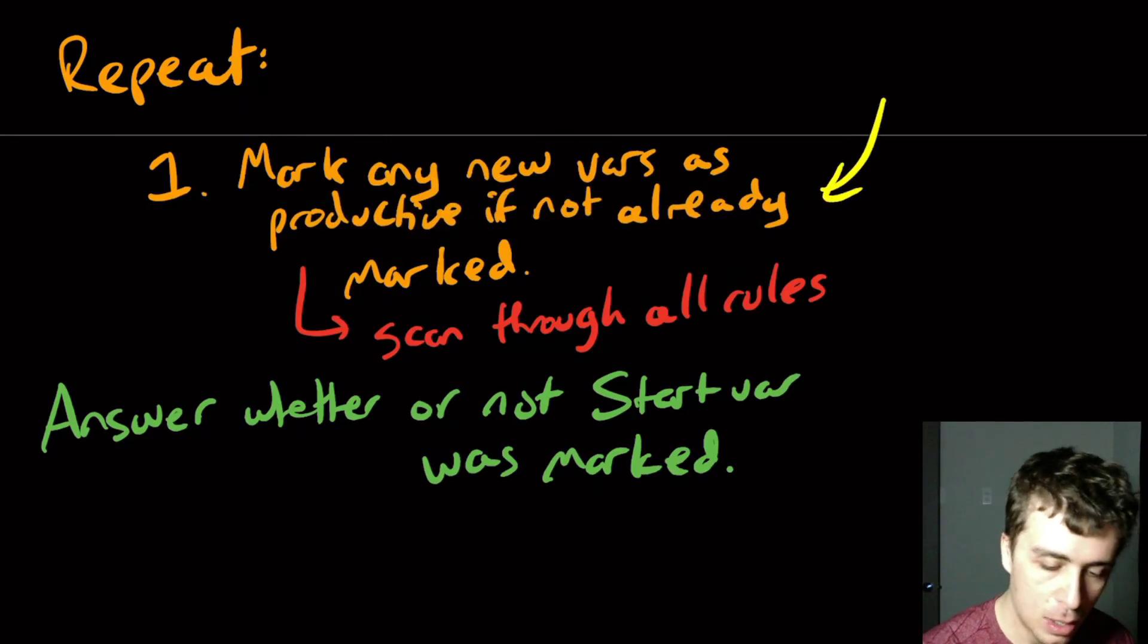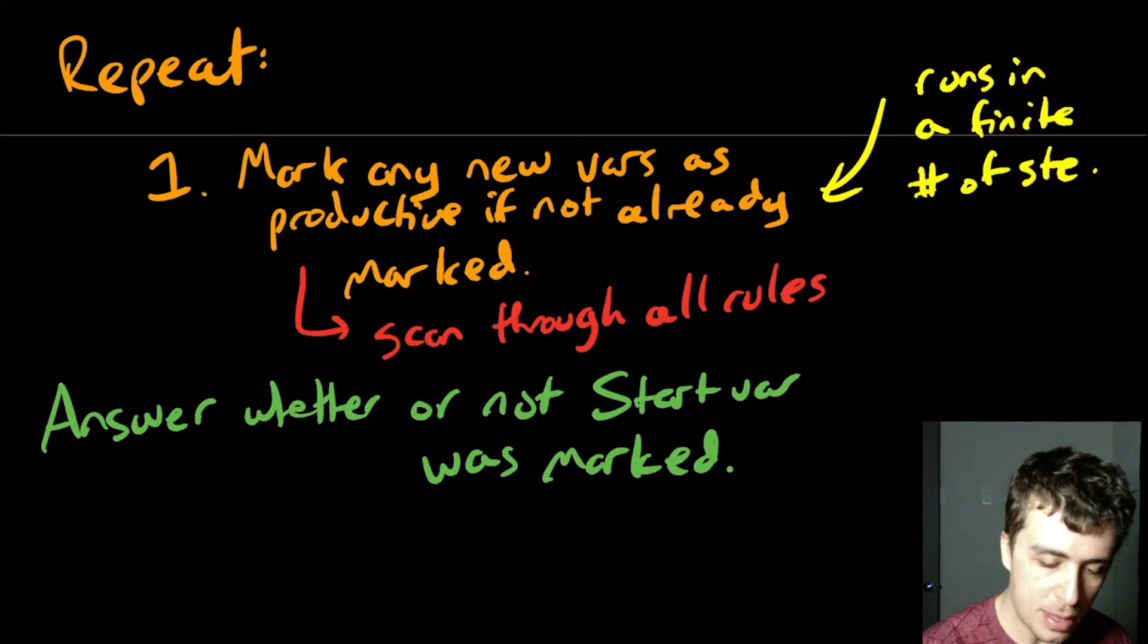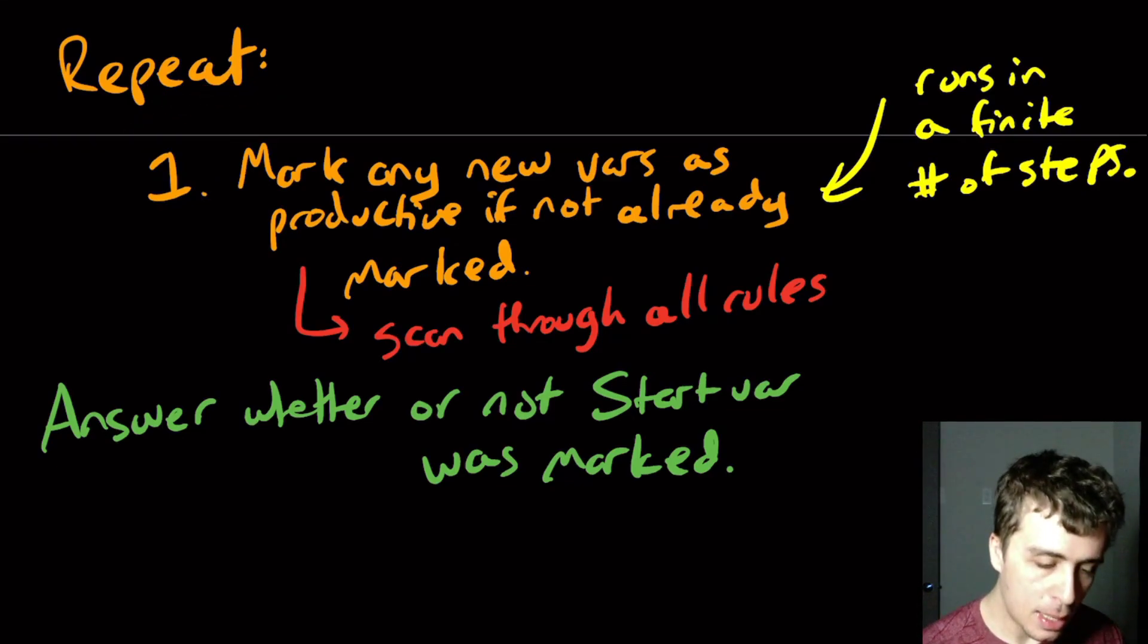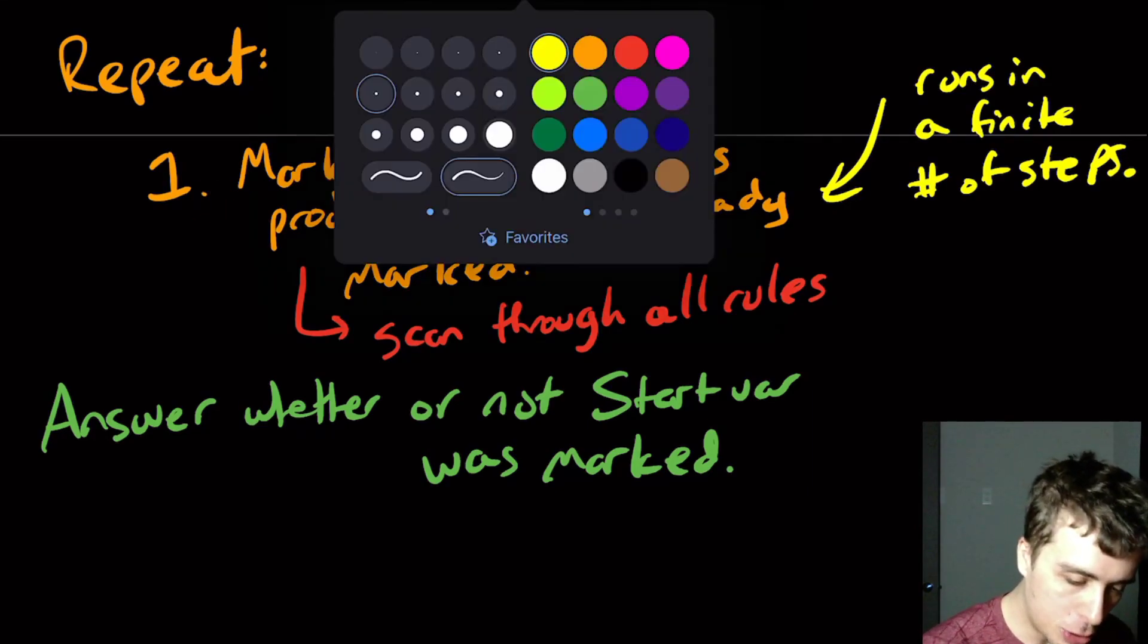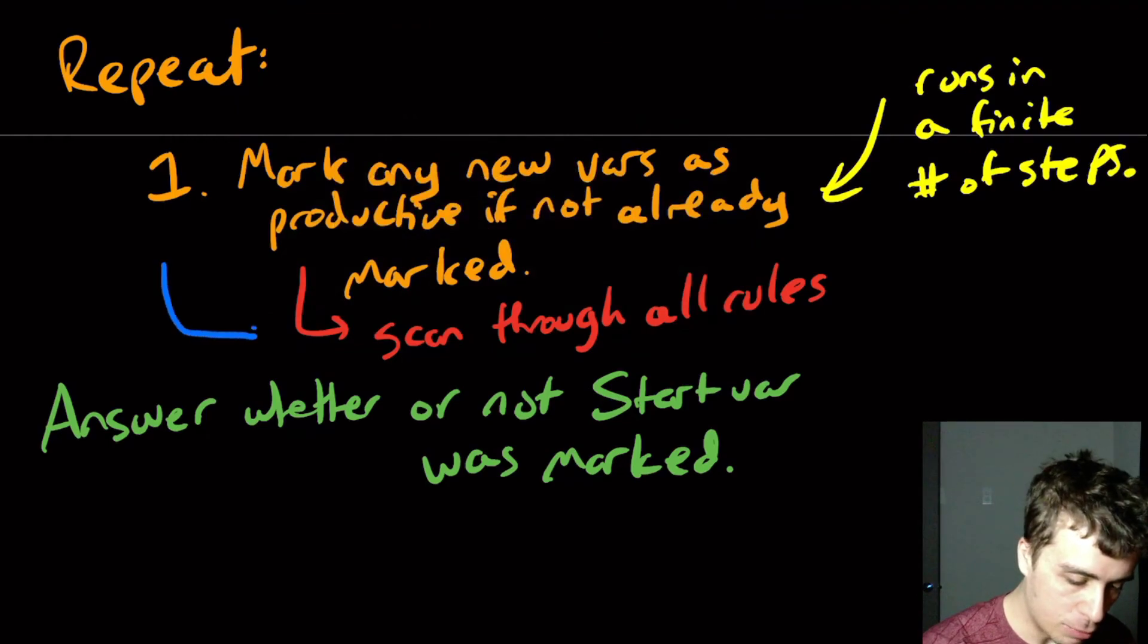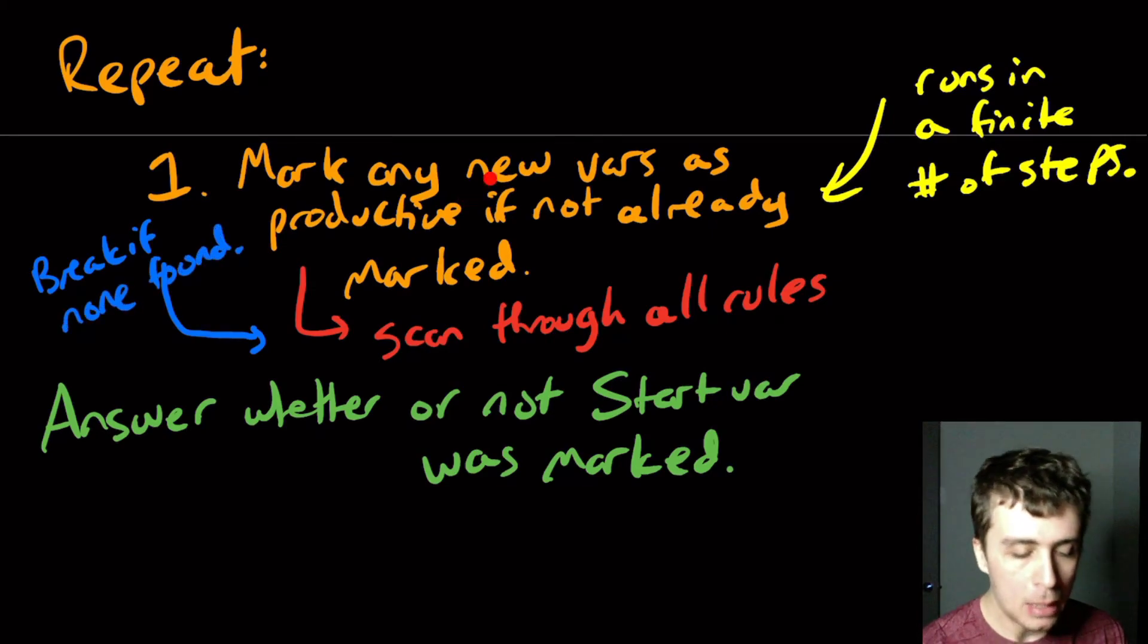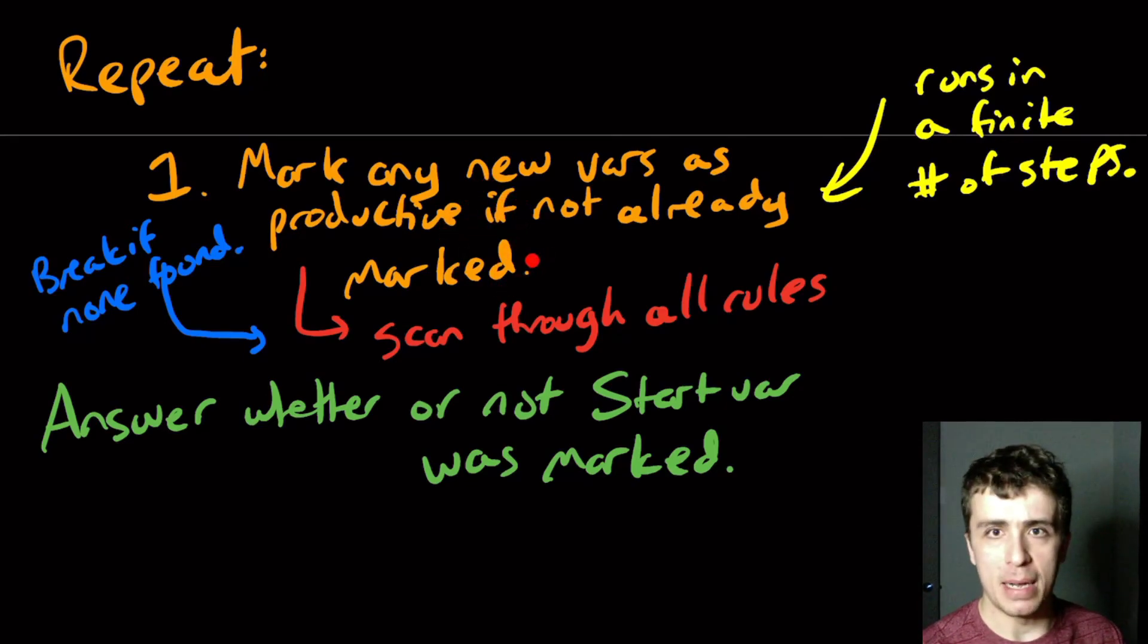So I claim that this runs in a finite amount of time. So this thing, this whole thing runs in a finite number of steps. You might not think that it does because this repeat right here doesn't have anything that says to stop. So what we should do here is I should insert something right here into right here that says break if none found. And that'll allow us to escape.